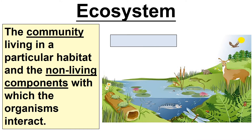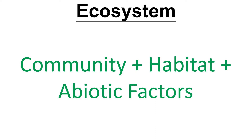Next thing is ecosystem. As I said, it's the community — all the plants and animals plus the non-living components. So there's a pond ecosystem. You've got your deer and frog and so on, and then the non-living components could be things like the light intensity, the pH of the soil, the oxygen level within the pond. A simple way to remember it: ecosystem = community + habitat + abiotic factors.